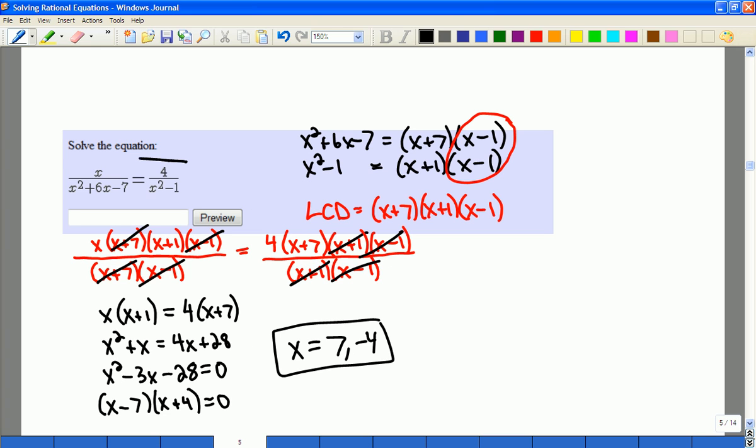When I go back to this original equation, here's the factored denominators. I can see that x can't equal negative 7, negative 1, or positive 1, or these pieces would end up being zero and I would divide by zero in the original equation.